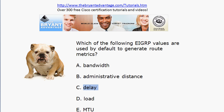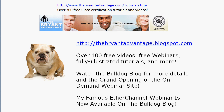If you're watching this on YouTube, be sure to check out my channel — we've got over 100 videos for Cisco certification candidates. I also invite you to visit thebryantadvantage.blogspot.com as well as the Bryant Advantage website. We've got free webinars, free videos, and fully illustrated tutorials. My EtherChannel webinar — almost 45 minutes of intensive CCNA and CCNP training — will be available on the YouTube channel and the Bulldog blog for free. Hope you enjoyed this video. I'm Chris Bryant, CCIE number 12933, and I'll see you at the Bulldog blog.